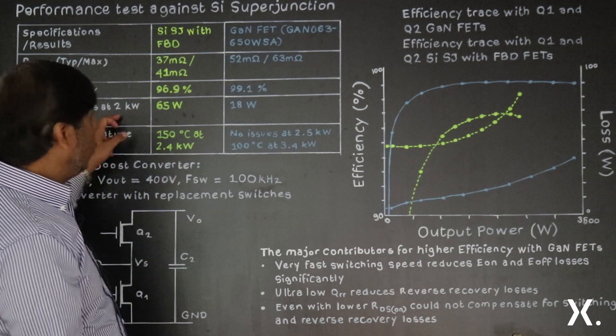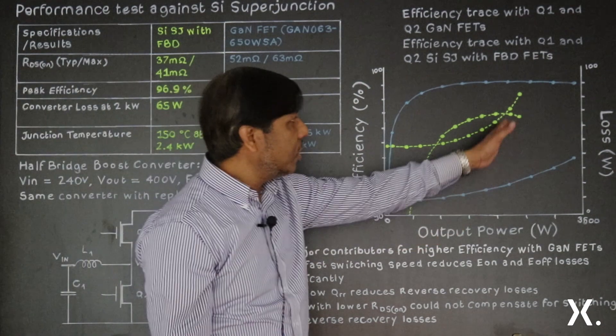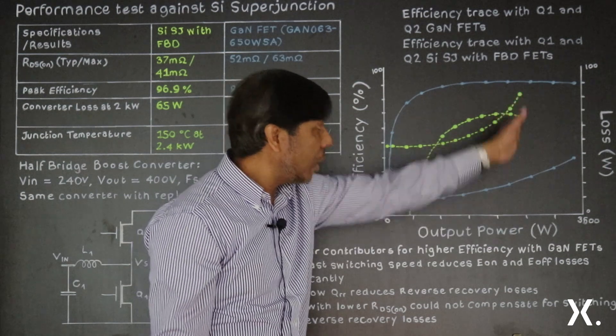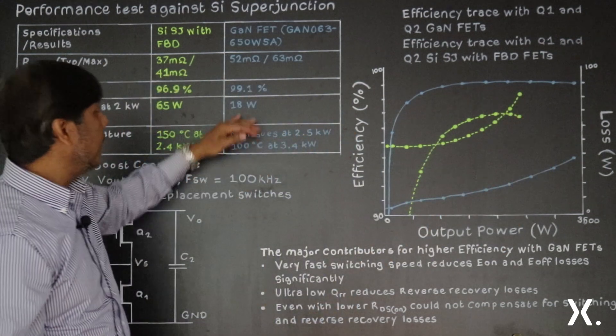But at around 2 kilowatts, we see the power loss with silicon is about 65 watts, and the gallium nitride is only 18 watts.